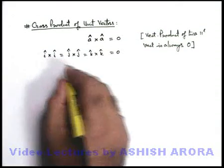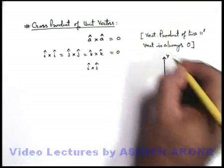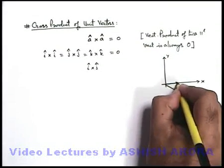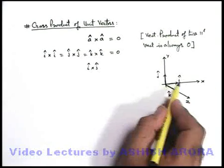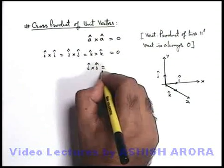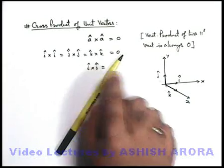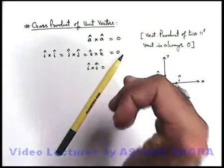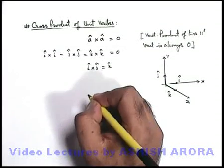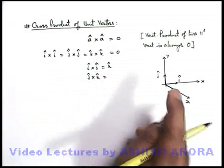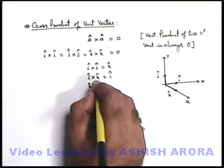If we find the cross product of different unit vectors, say i cross j, using a coordinate system x, y, z — where the unit vector in x direction is i-cap, in y direction is j-cap, and in z direction is k-cap — the magnitude is one since both are unit vectors. The direction is given by the right hand thumb rule: rotating fingers from i to j, the thumb points upward along the z-axis, so i cross j equals k-cap. Similarly, j cross k equals i-cap and k cross i equals j-cap.